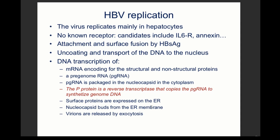This virus replicates in the hepatocyte and does not cause a lytic infection. The attachment protein is not fully known but it fuses with the membrane, uncoats, and the DNA goes into the nucleus. From there, mRNA encoding structural and non-structural proteins is produced, and a pre-genome RNA (pgRNA) is synthesized and packaged into the nucleocapsid in the cytoplasm.